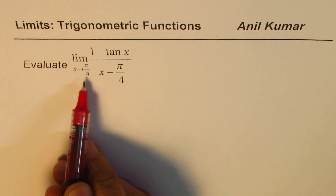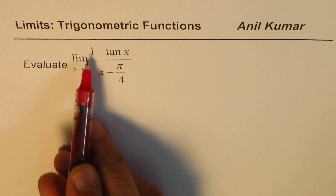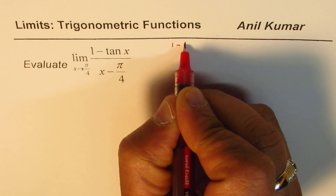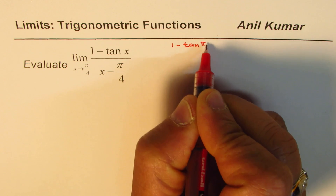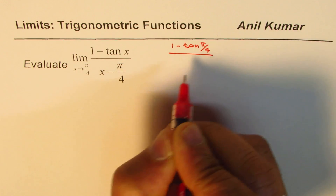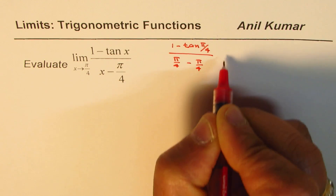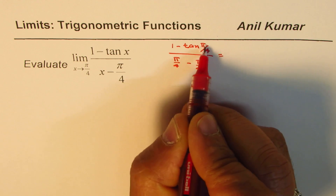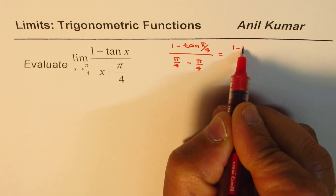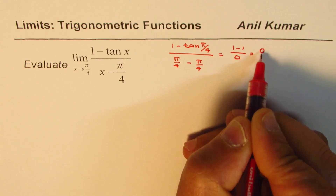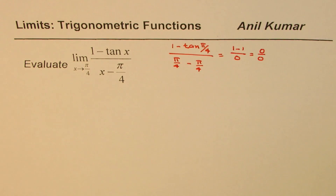If I substitute x = π/4, I get (1 - tan(π/4)) divided by (π/4 - π/4). Since tan(π/4) = 1, we get (1 - 1) / 0, which is 0/0. So that is an indeterminate form, and we need to use some identities to simplify and then find the limit.